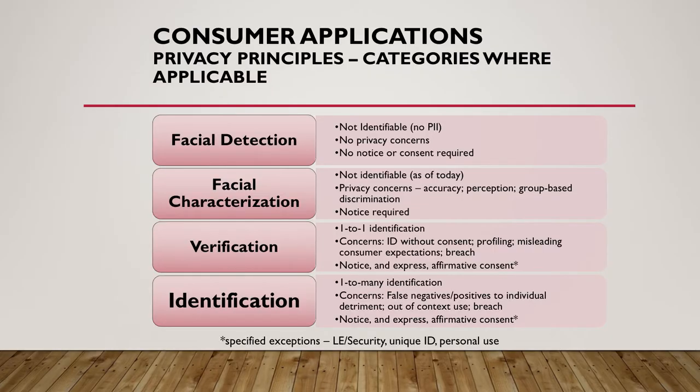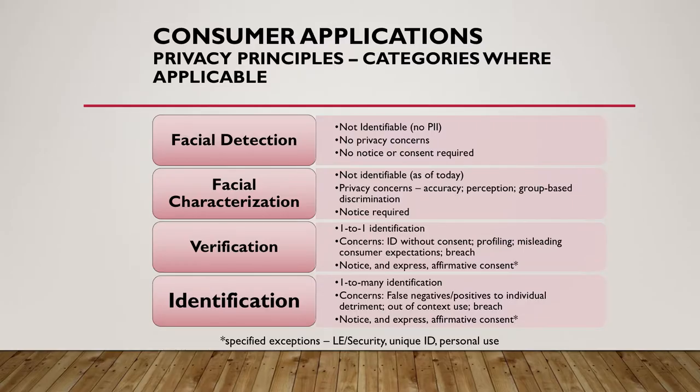Facial characterization is a step up from that — somewhat analogous to what a person standing there looking might do. You might assume that someone walking by is male or female, note how tall they are, their hair length, whether they wear glasses, or even whether they're smiling or sad. These are characterization techniques that are not unique to a person. It captures a single image evaluated in a moment in time, and does not match to anything in a system.